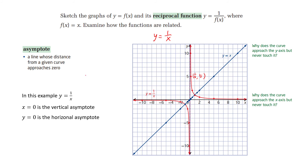Here we introduce a new term: asymptote. An asymptote is a line whose distance from a given curve approaches 0. In this example, x equal to 0 — the y-axis — is a vertical asymptote because the curve gets very close to it but never touches it. And y equal to 0, the x-axis, is a horizontal asymptote — again, very close but never touching.